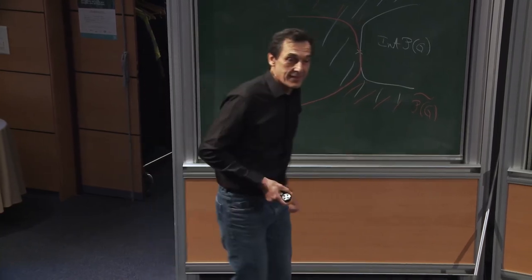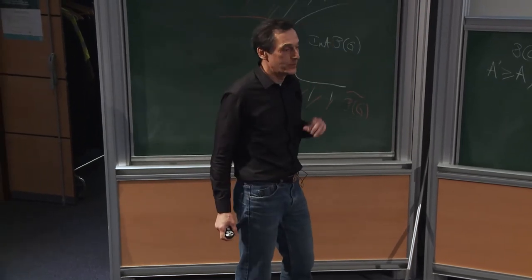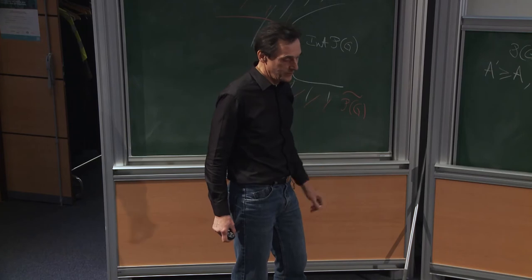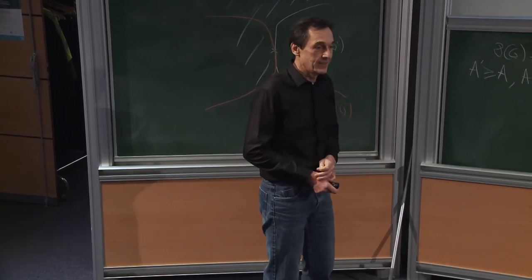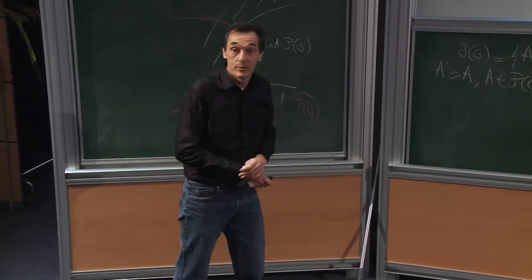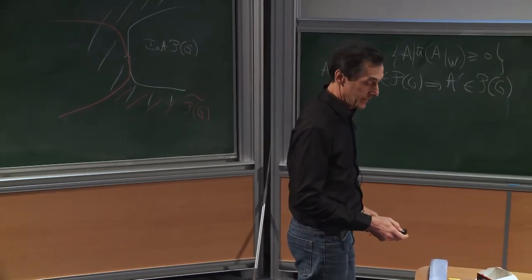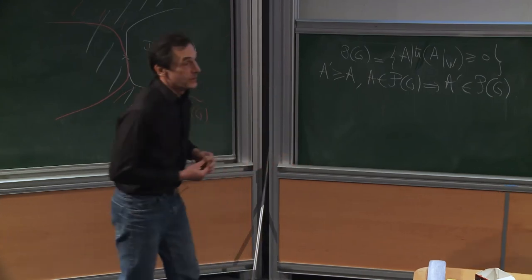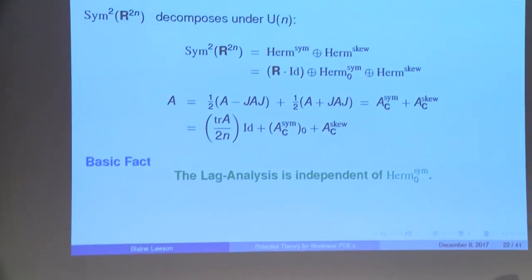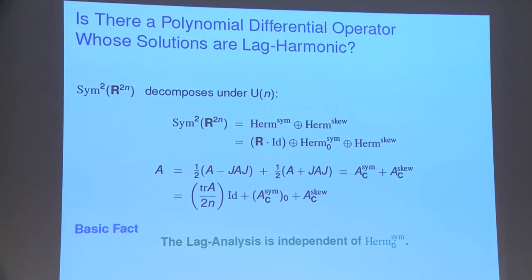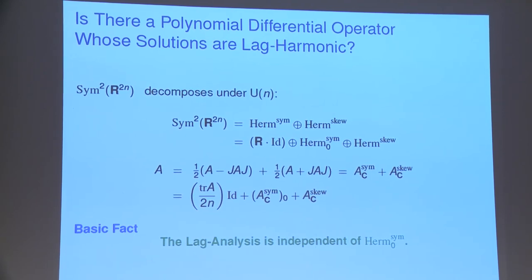Now, the contents of paper number fifteen: the Monge-Ampère operator. We'd like to write a differential equation that, at least in the smooth case, characterizes these Lagrangian harmonic functions. Up to now we have given a geometric definition, and it would be nice to have an equation like 'determinant of Hessian equals zero' — and that is exactly what we are aiming at.